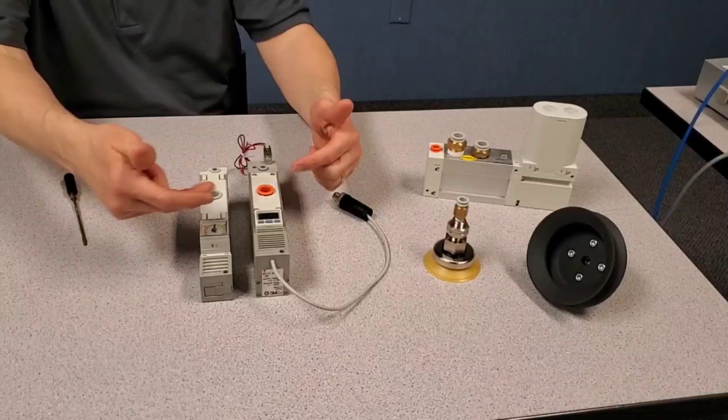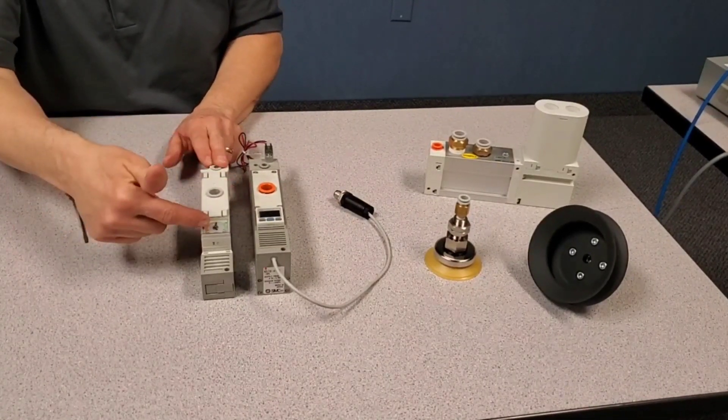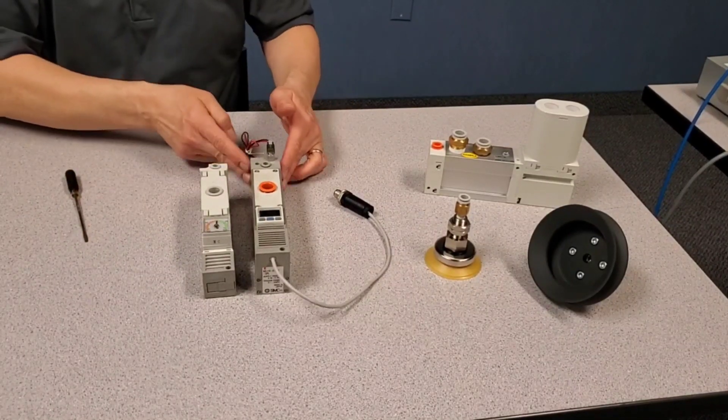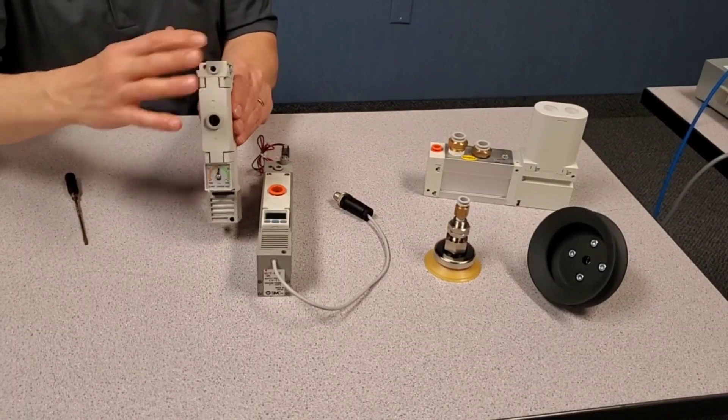Both are available. The new one is available with an analog or needle gauge as well as a digital gauge. This one is showing solenoid valves. This one is also available with solenoid valves.